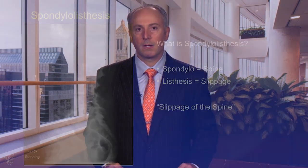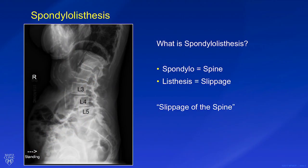The term spondylolisthesis comes from two Greek roots: spondylo, which means spine, and listhesis, which means slippage. Spondylolisthesis is exactly what the name implies — it occurs when one of the spinal vertebrae slips forward, backwards, or sideways in relationship to the vertebrae below it.